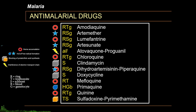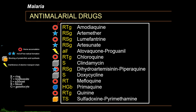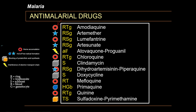Amodiaquine is used primarily for treatment of uncomplicated or severe malaria, usually in combination with artesunate. Its mechanism of action is interference with the heme detoxification process. It is effective against large ring stages, trophozoites, and has some action on gametocytes, primarily of Plasmodium vivax, ovale, and malariae. Side effects include GI disturbances, hepatotoxicity, and granulocytosis. It is contraindicated in hypersensitivity reactions, history of hepatic impairment, and those with neutropenia or retinopathy, and is rarely used for prophylaxis.